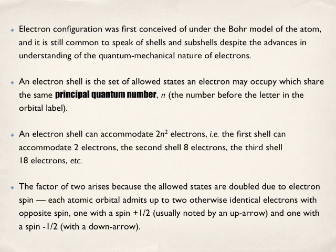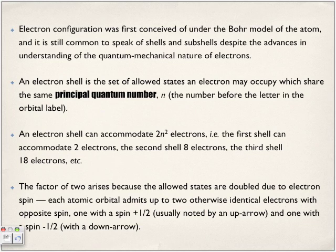So the factor of two arises because the allowed states are doubled due to the electron spin. Each atomic orbital admits up to two otherwise identical electrons with opposite spin. One in a positive half spin and another one in a negative half spin. And what we're going to look at, when drawing electrons, we're going to draw them in this arrow format. One electron going upward to represent the positive spin. One electron going downward. And like I said, don't worry about this part right now.